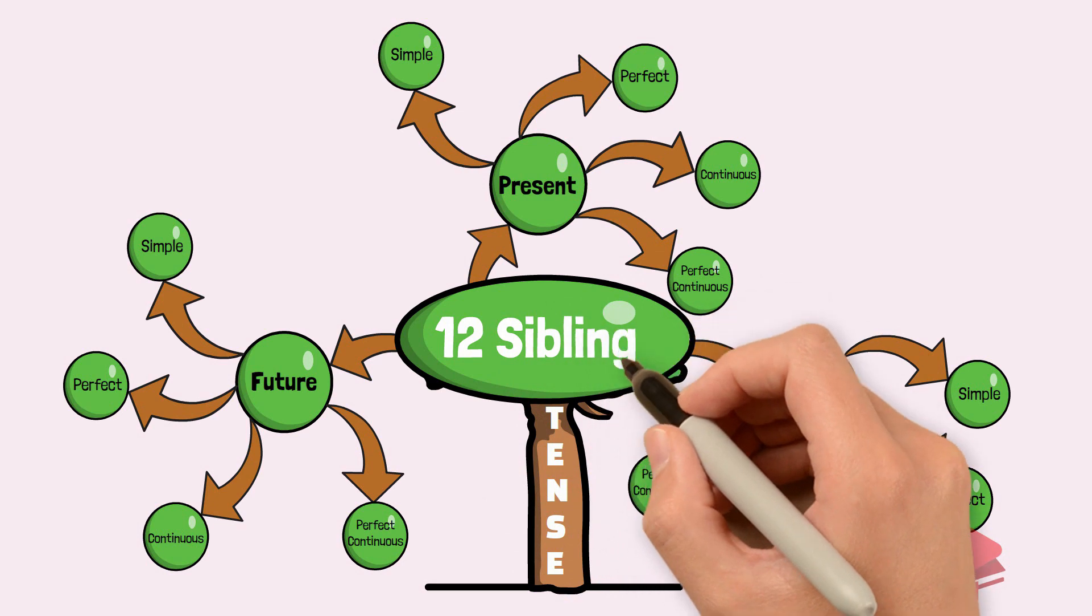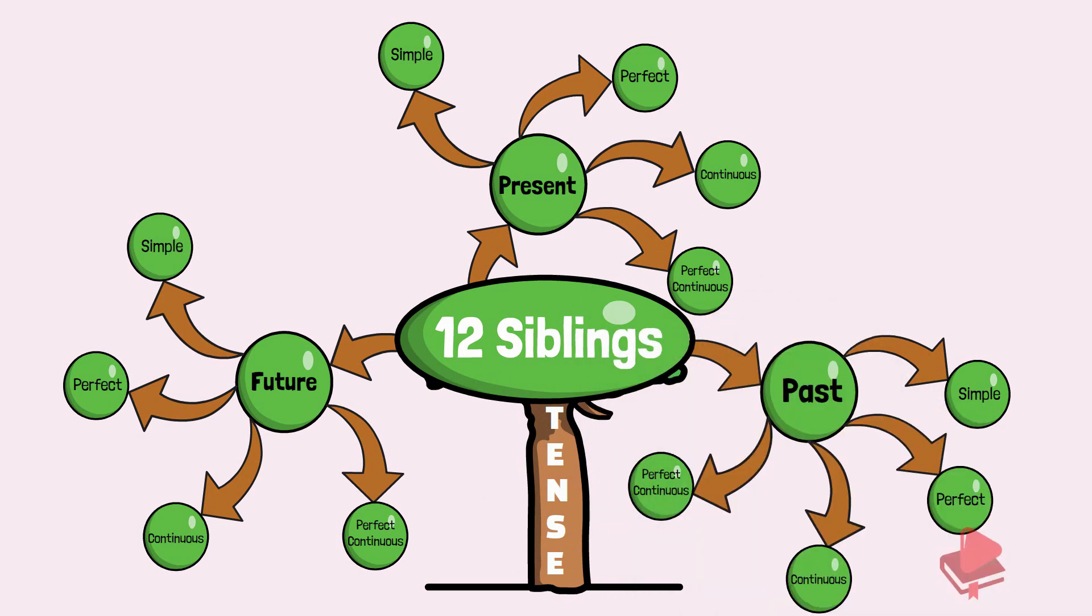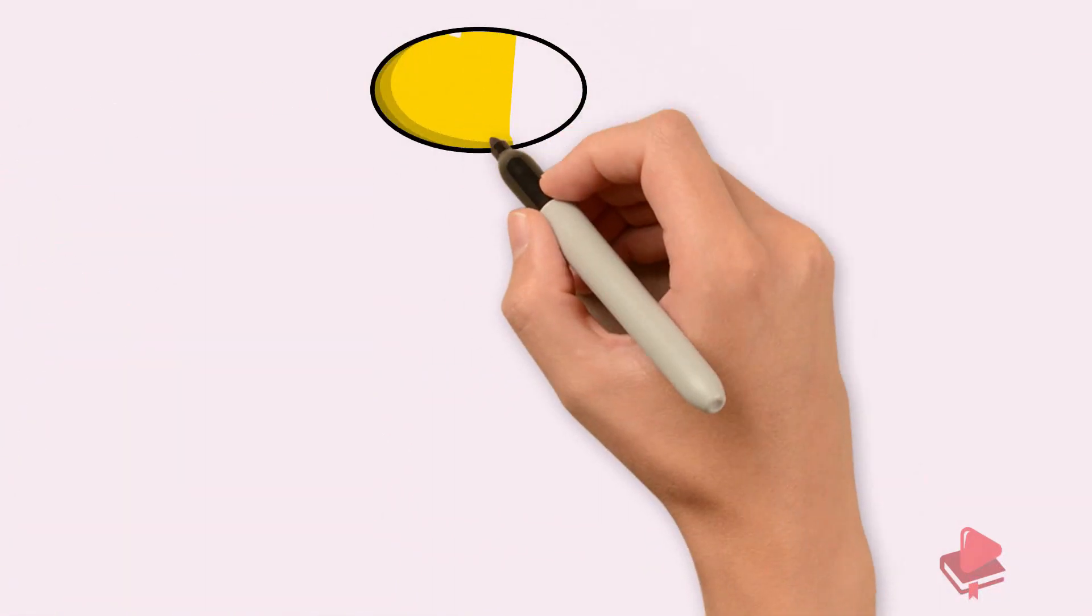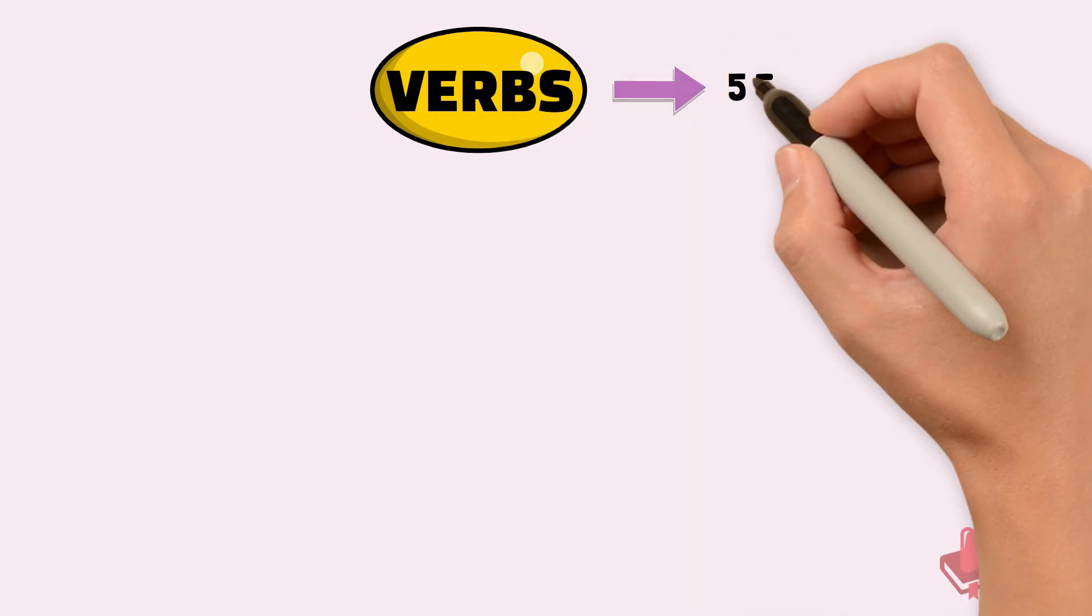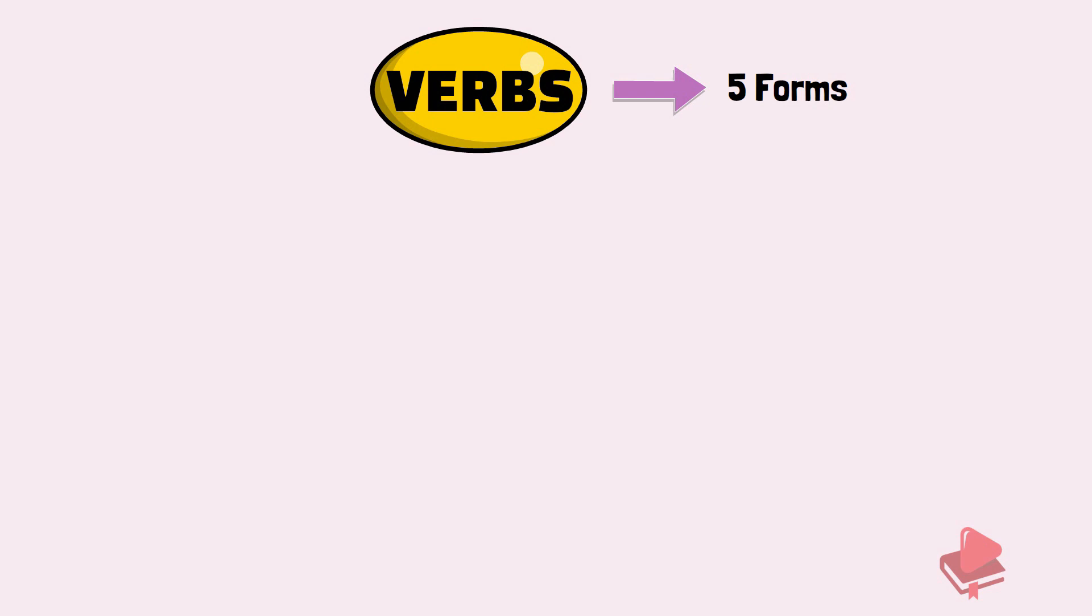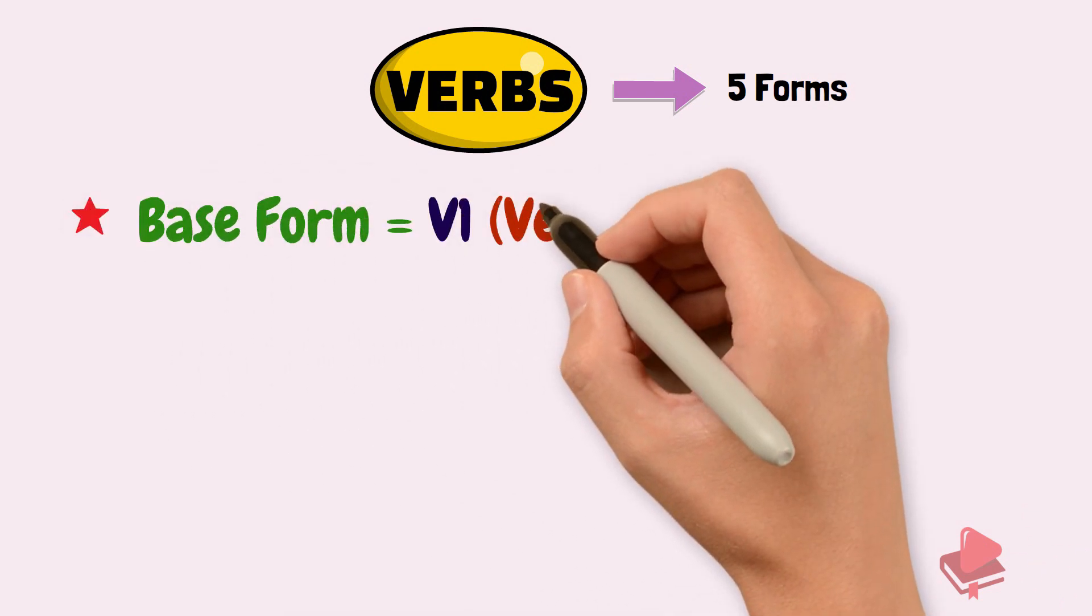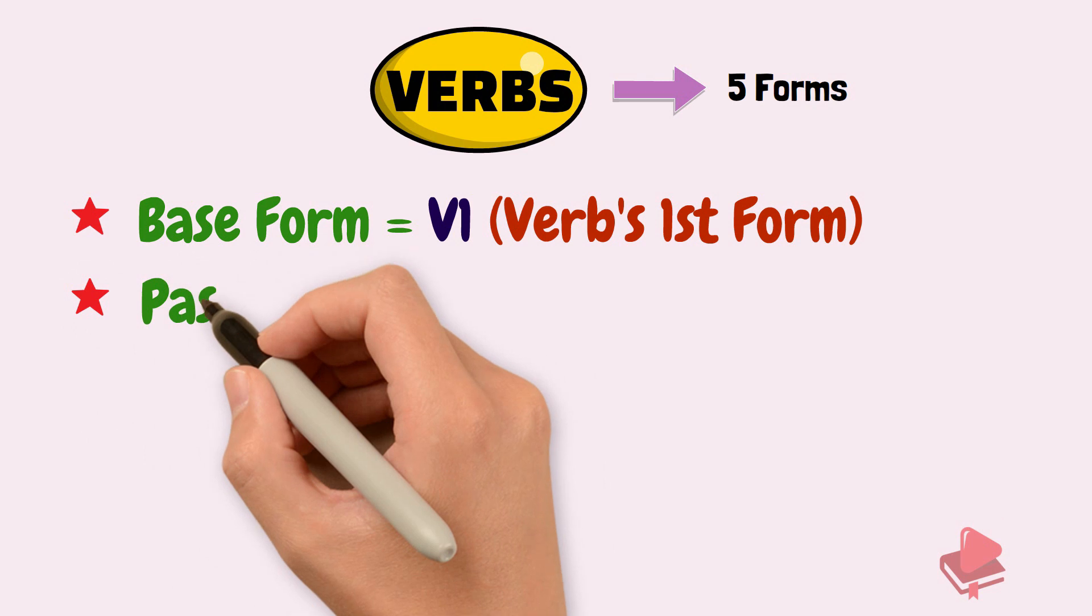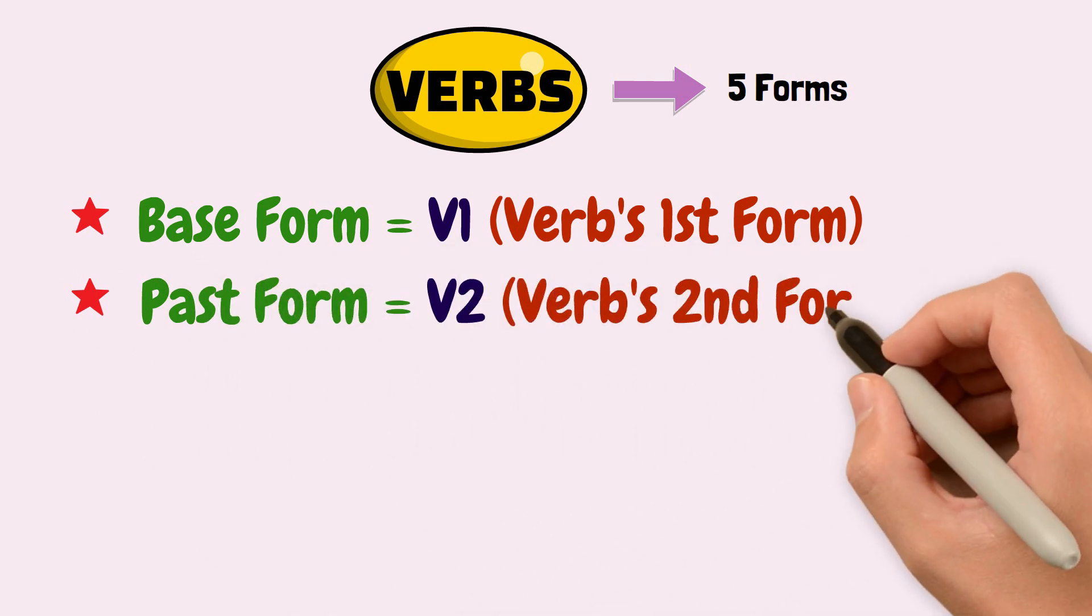So, we are going to learn each of them. Before that, it is important to revise the form of verbs. Verbs are mainly divided into five forms. That is, base form will be denoted with V1, past form as V2, past participle as V3, S or ES form as V4, and ING form as V5.